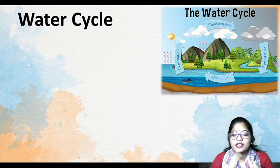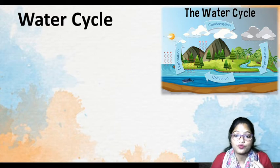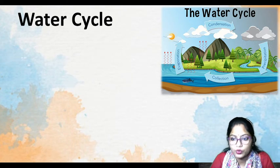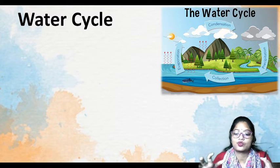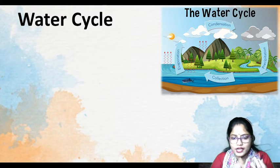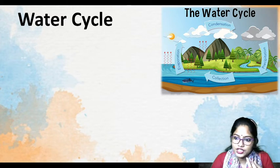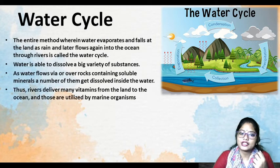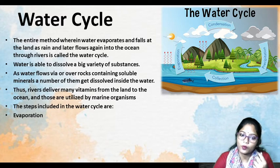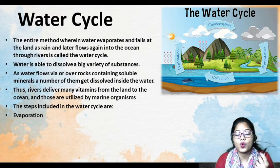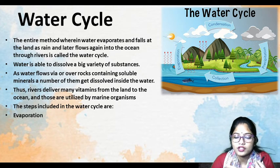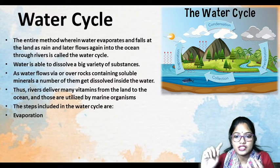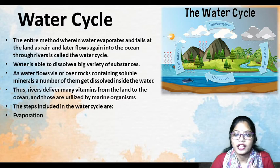The water vapor will make up clouds. After clouds form, they will be condensed and will get precipitated in the form of rain. Then the water will collect in water bodies. So mainly four processes: evaporation, then condensation, then precipitation, then collection. The entire method wherein water evaporates and falls on land as rain and later flows again into the ocean — this transfer of substances goes on like a cycle. It is a continuous cycle, and that is called the Water Cycle.